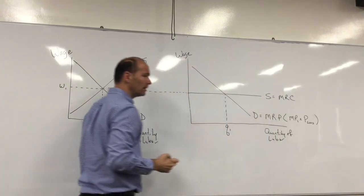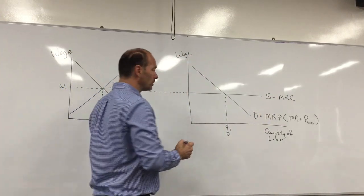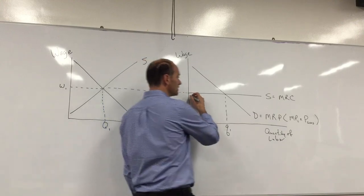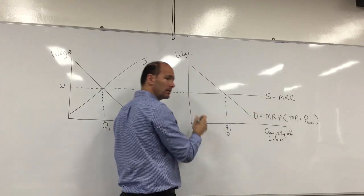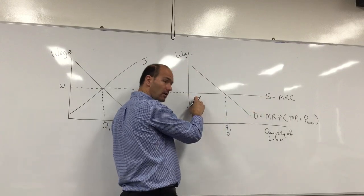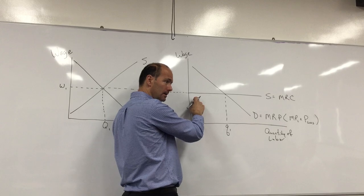No matter how many workers they hire, they have to pay those workers the market wage. So this horizontal curve here is the supply curve for the firm—no matter how many workers it hires, it has to pay those workers that wage.